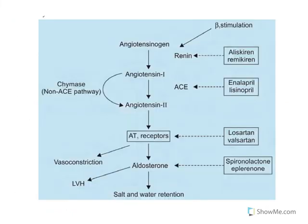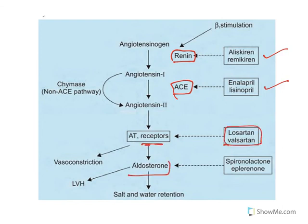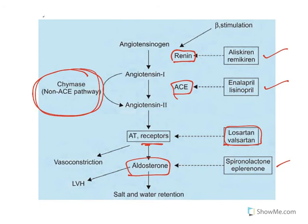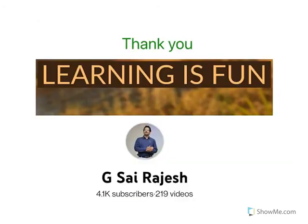In summary: beta stimulation releases renin and is inhibited by aliskiren. The ACE enzyme is inhibited by all '-prils'. Angiotensin receptors are blocked by losartan and valsartan. To block aldosterone, spironolactone or eplerenone can be used. The chymase ACE-independent pathway is a non-ACE pathway by which angiotensin II is formed. If you like the video content, do subscribe and share. Thank you for watching.